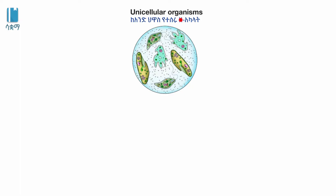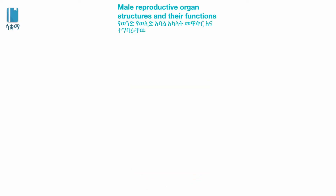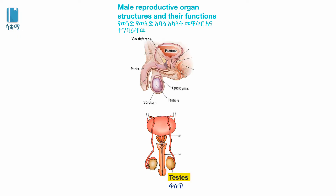Unicellular organisms have the same reproductive organs. Multicellular organisms have more complex structures. The main reproductive organ structures and their functions differ between organisms. Testosterone is a sex hormone.